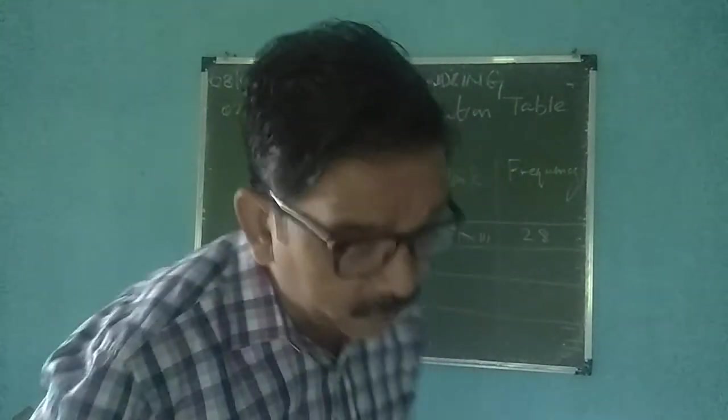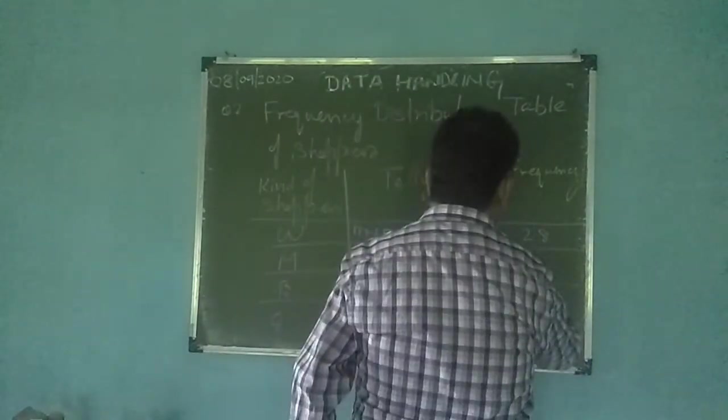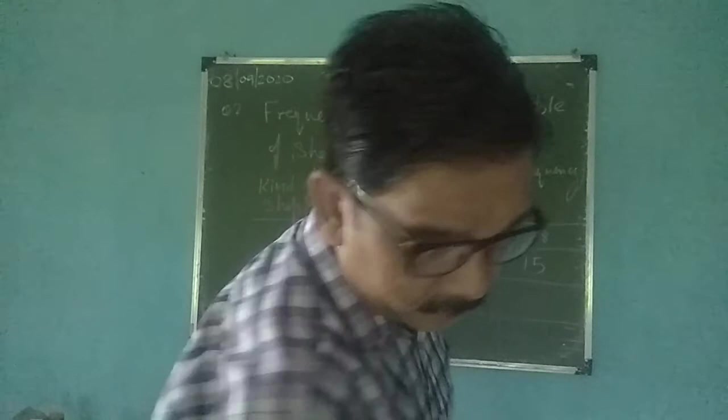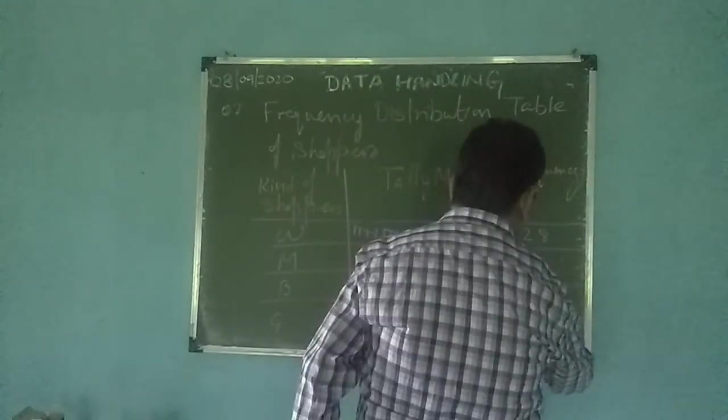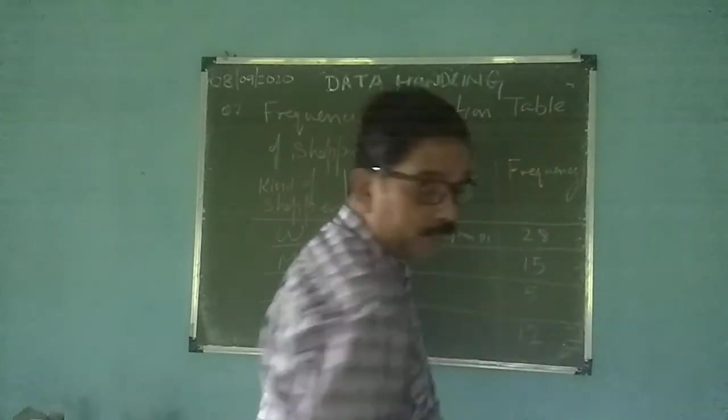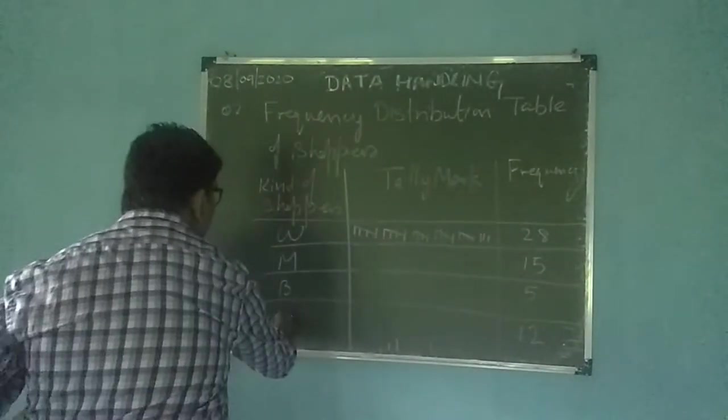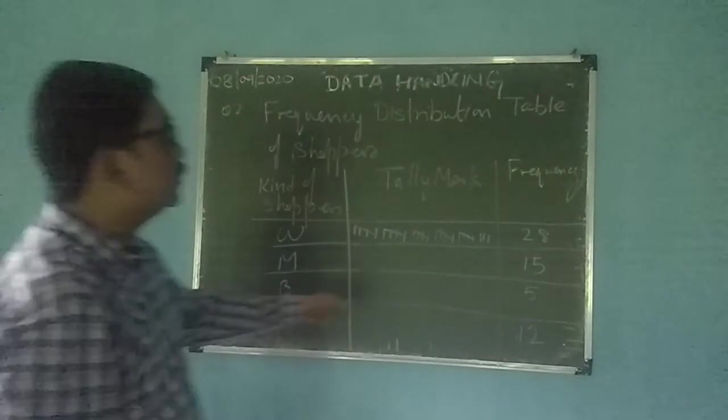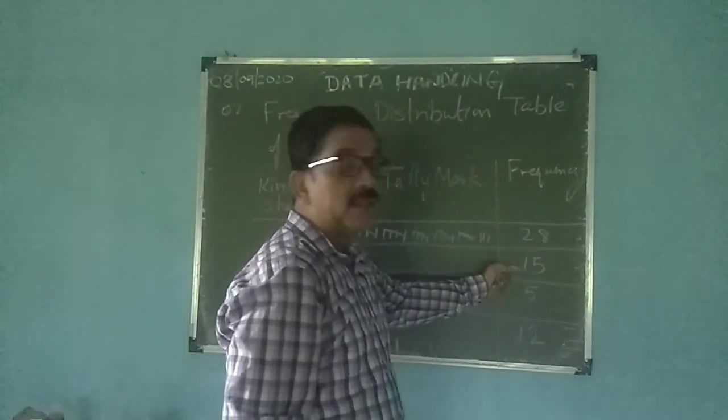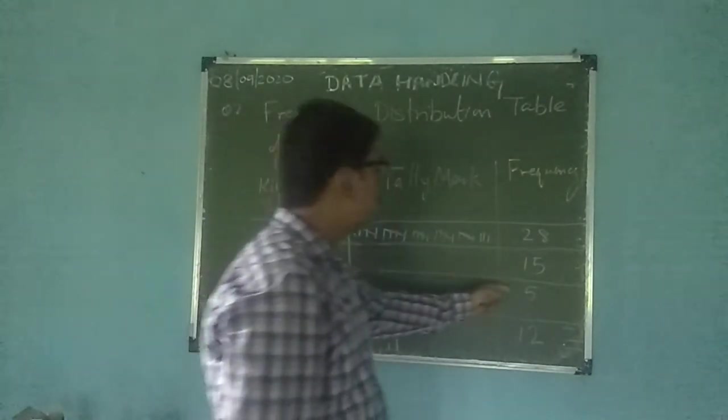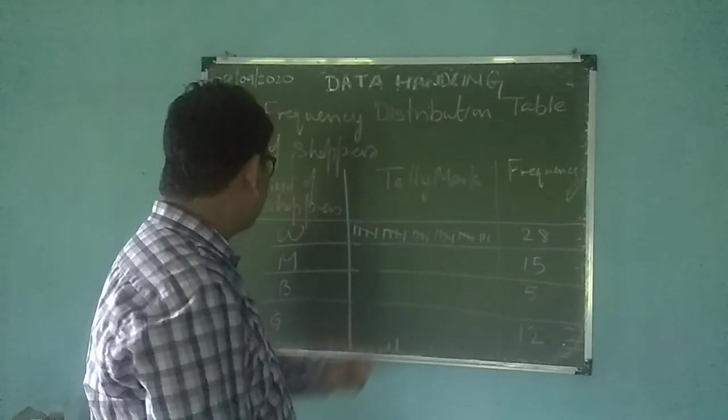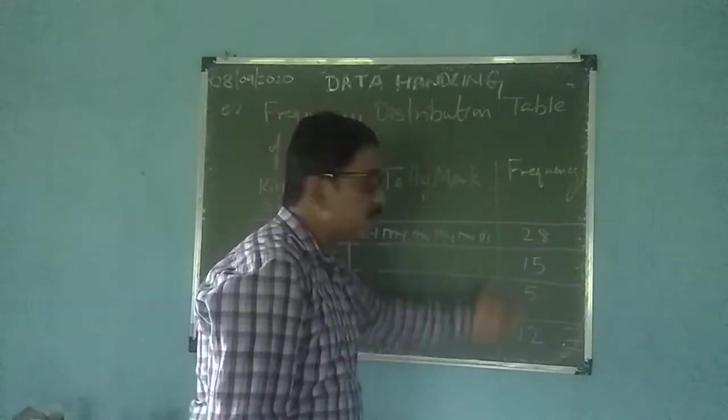Similarly you will find number of M's are 15 and number of B are 5 and number of G are 12. So these are the shoppers. And this way there are 28 W shoppers, 15 M shoppers, there are 5 B shoppers and there are 12 G shoppers. So this is called frequency.